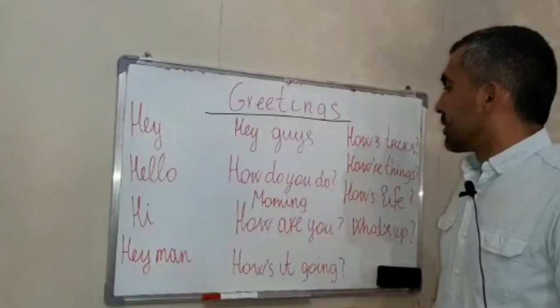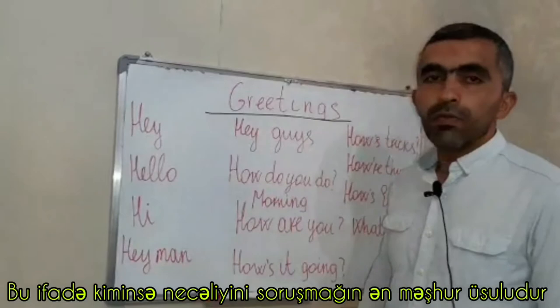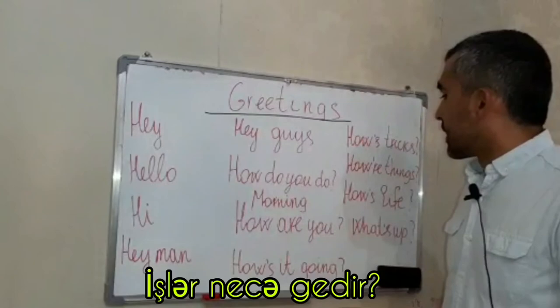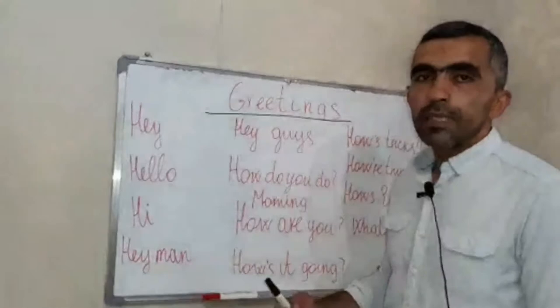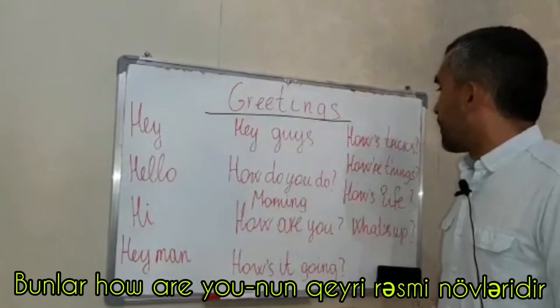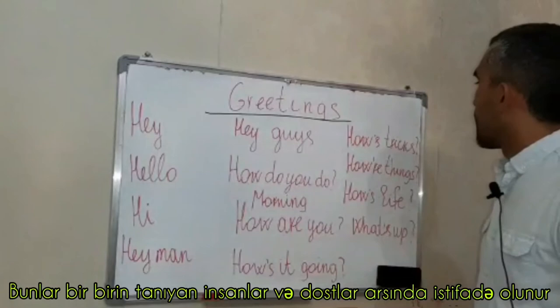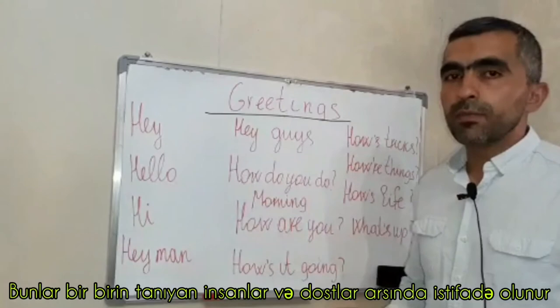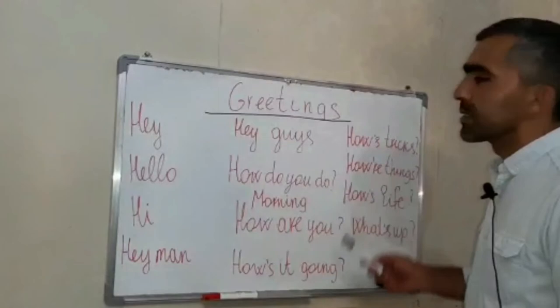'How are you?' — this phrase is the most well-known way of asking how someone is. 'How is it going?' — you don't say 'how is it going' formally; you say 'how's it going?' These are very informal ways of saying 'how are you' and these phrases are common between people who know each other very well.